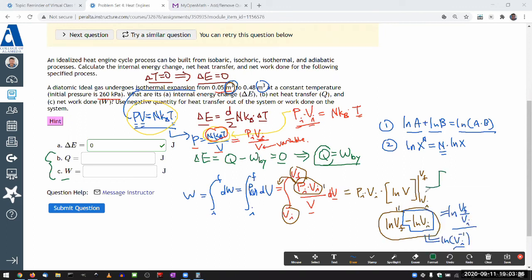Because for the work done, I have initial pressure times the initial volume times the natural log of the ratio of the two volumes, V final over V initial. So I think I can do that in the calculator.